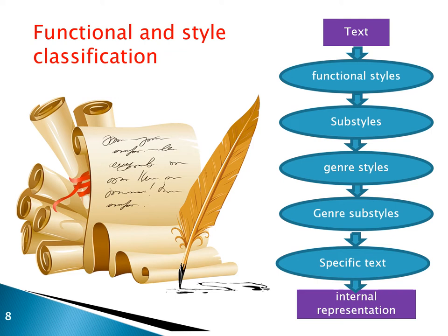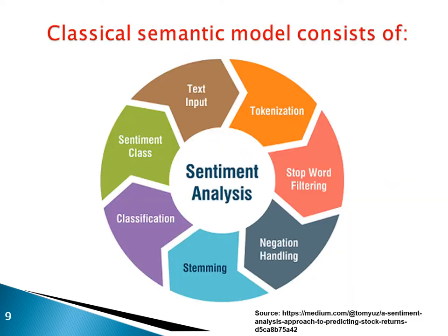One of the subtasks of semantic analysis is the allocation of functional and style characteristics at the stage of pre-processing the text. The semantics of texts of different functional and style types and in different parts of the document are different, but depending on the type of text, it helps to determine the meaning within the framework of a particular direction. Today, semantic analysis of text in various fields has more than a trillion search results in Google Scholar.